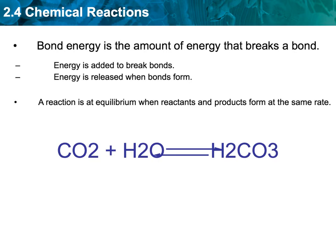If a reaction is going at the same rate from the reactants on the left side to the products on the right side, and you see an equal amount, if it's at equilibrium, it's at the same rate. The reaction is therefore at equilibrium.